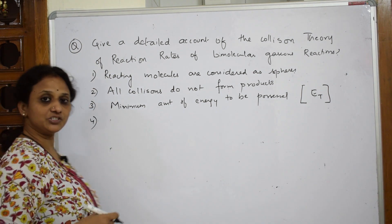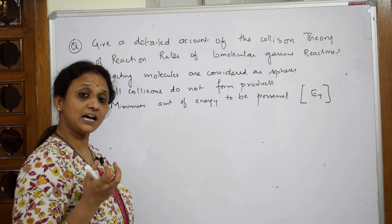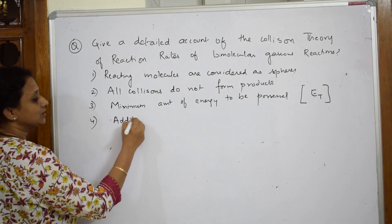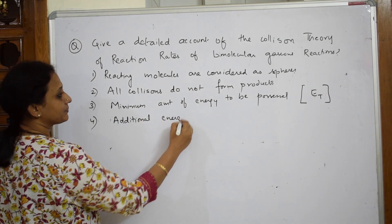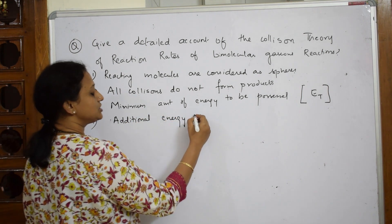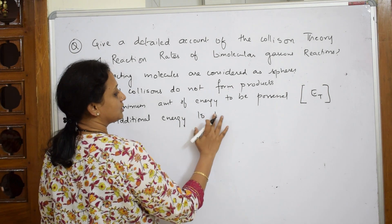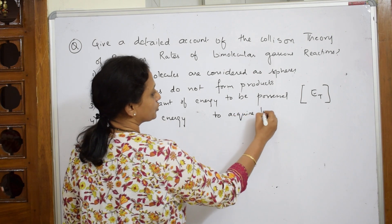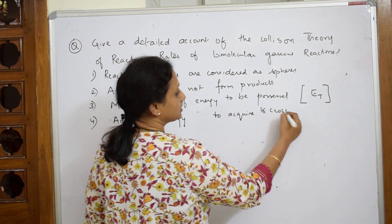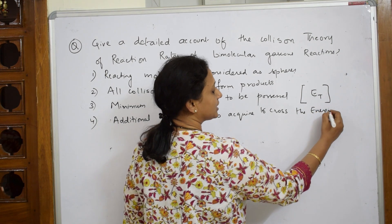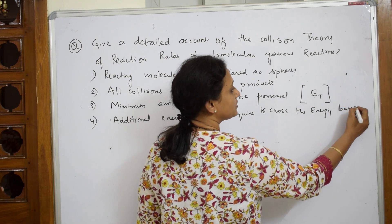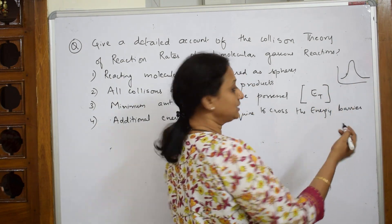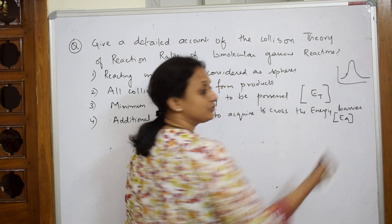Apart from threshold energy, collision theory also says they should possess additional energy to cross the energy barrier. This additional energy required to cross the energy barrier is called Ea — the energy of activation. So, Ea equals threshold energy (Et) minus the energy of reacting molecules (Er).